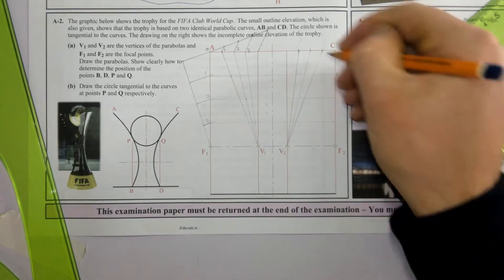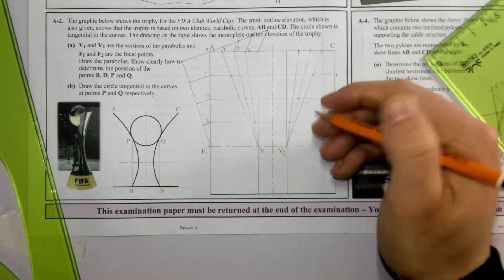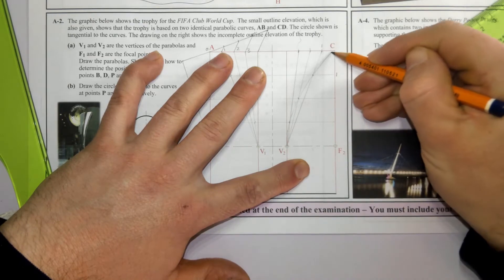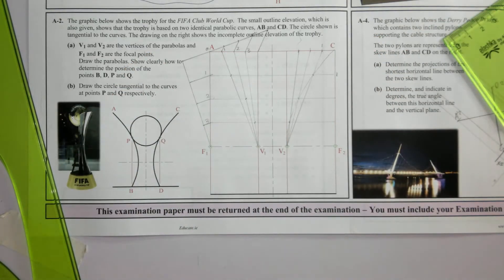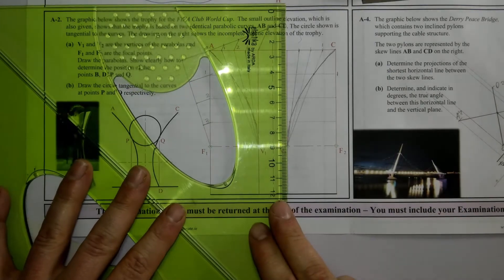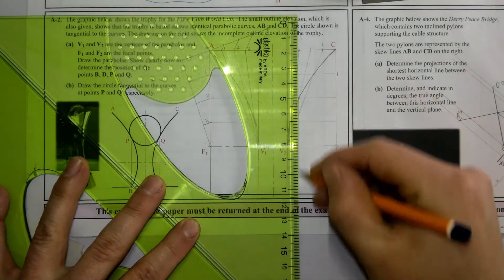So where 1 touches 1 is a point on the curve. 2 touches 2, 3 touches 3 is a point on the curve. Same over here: 1 is a point on the curve, 2, 3 points on the curve. And we can freehand sketch those in.